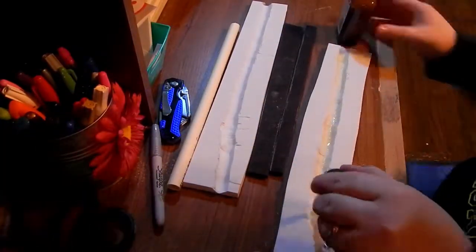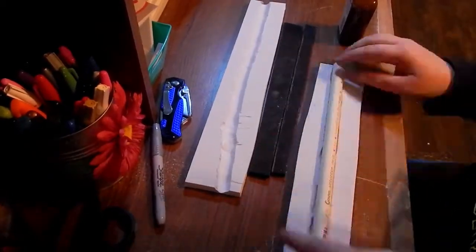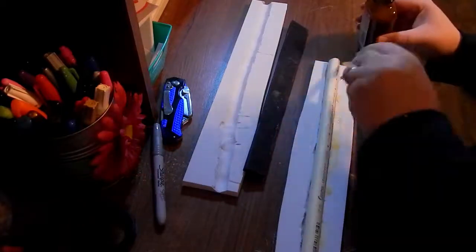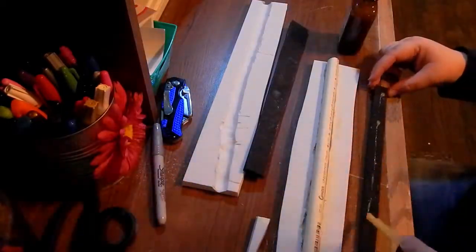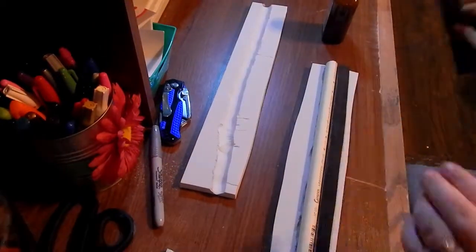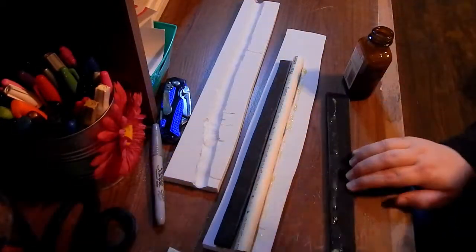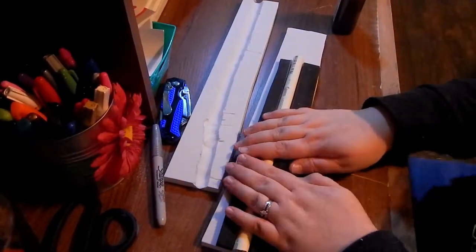Then I just sort of sandwiched everything in between the EVA foam with Weldwood contact cement. I learned later that it's actually better to spread the glue out over your pieces and let it dry for a few minutes before trying to stick it together. That just turned into a mess and it had to sit forever to dry.